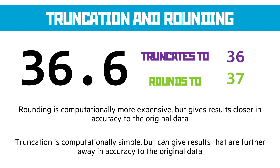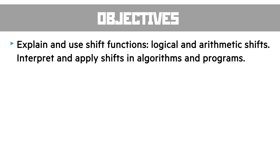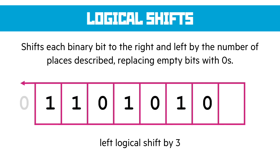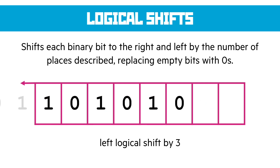The first main A2 objective is explaining the use of shift functions — logical and arithmetic — and interpreting and applying them in algorithms and programs. A logical shift moves each binary bit to the right or left by the specified number of places, replacing any empty bits with zero. For example, a left logical shift by three moves the entire set of binary bits three places to the left; bits drop off the left end, and three blank spaces on the right are filled with zeros.